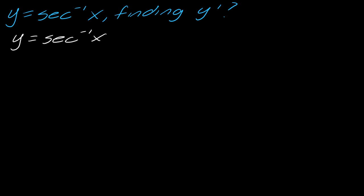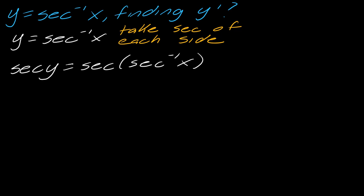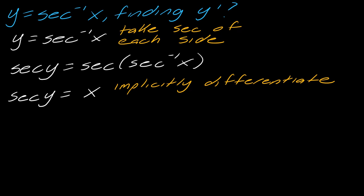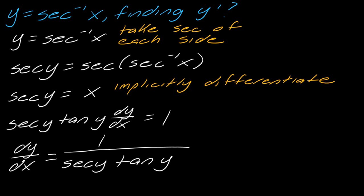Now what about inverse secant? By now you can see the idea — we do the same thing. We take secant of each side, and by the inverse property we get secant of y equals x. Then we implicitly differentiate. The derivative of secant y is secant y times tangent y times dy/dx equals one. Solving for dy/dx gives one over secant y times tangent y.